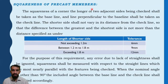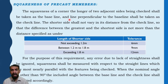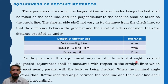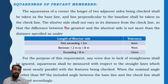Squareness of a precast member: the longer of two adjacent sides being checked shall be taken as a baseline, and a line perpendicular to the baseline shall be taken as the check line. The shorter side shall not vary in its distance from the check line such that the difference between the greatest and shortest measurement exceeds the specified tolerance: not exceeding 1.2 meters — 6 mm; 1.2 to 1.8 meters — 9 mm; exceeding 1.8 meters — 12 mm.